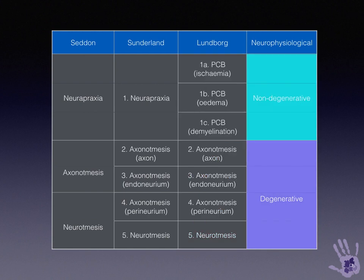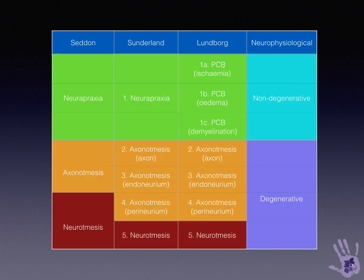The easiest classification is the neurophysiological classification, which breaks down injuries into non-degenerative — i.e., no Wallerian degeneration — and degenerative, where Wallerian degeneration has occurred and the nerve needs to regrow. This is a comprehensive classification showing the difference between the various types described from Seddon through to Lundberg.